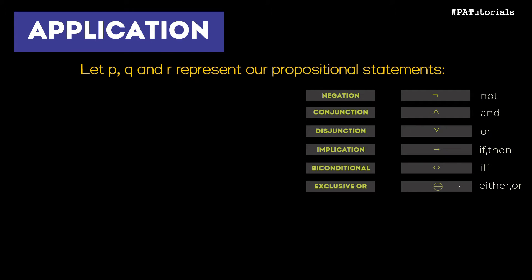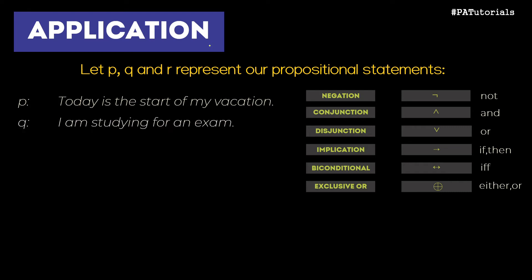In our examples, let P, Q, and R represent our propositional statements — meaning we have three propositional variables. For P, we have: 'Today is the start of my vacation.' For Q, we have: 'I am studying for an exam.' And for R: 'I am watching my favorite anime.'